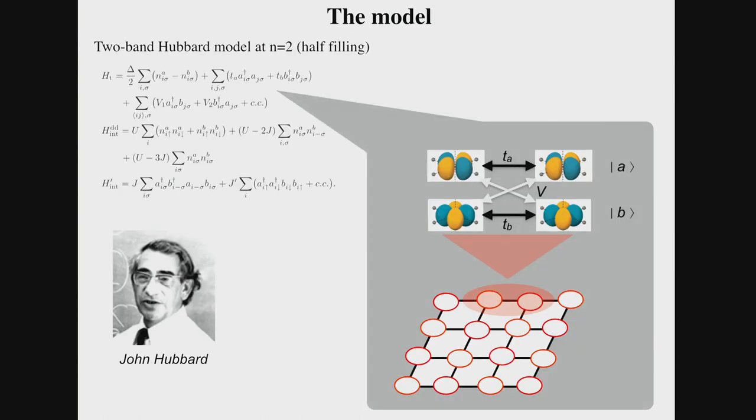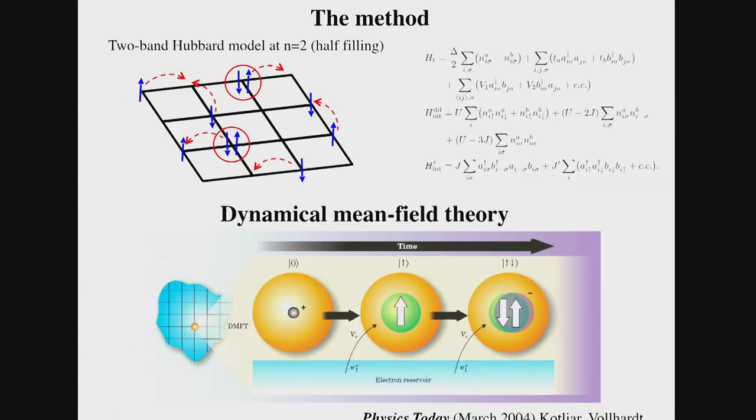What is our model? It's a simplification of real material. Instead of T2G and EG bands of real cobaltates, we have just two bands called A and B. We study a two-orbital Hubbard model on a square lattice with nearest neighbor hopping, primarily diagonal between orbitals of the same type, but also including cross hopping between different orbital types. We include local Coulomb interaction with Hund's coupling, which is an important part of the problem we want to study.